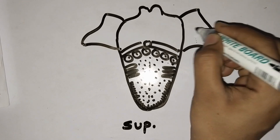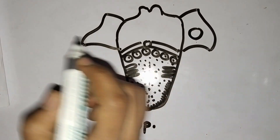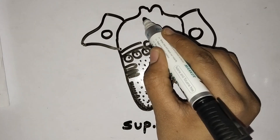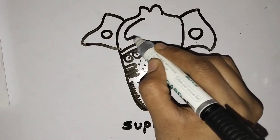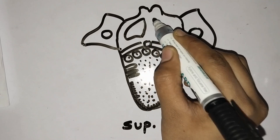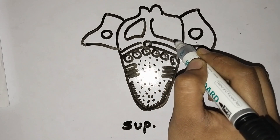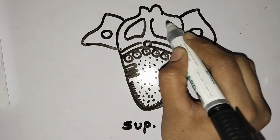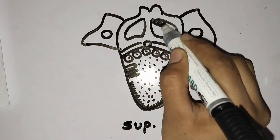These are the palatine tonsils on both sides. And lastly, these are the lymphoid follicles.